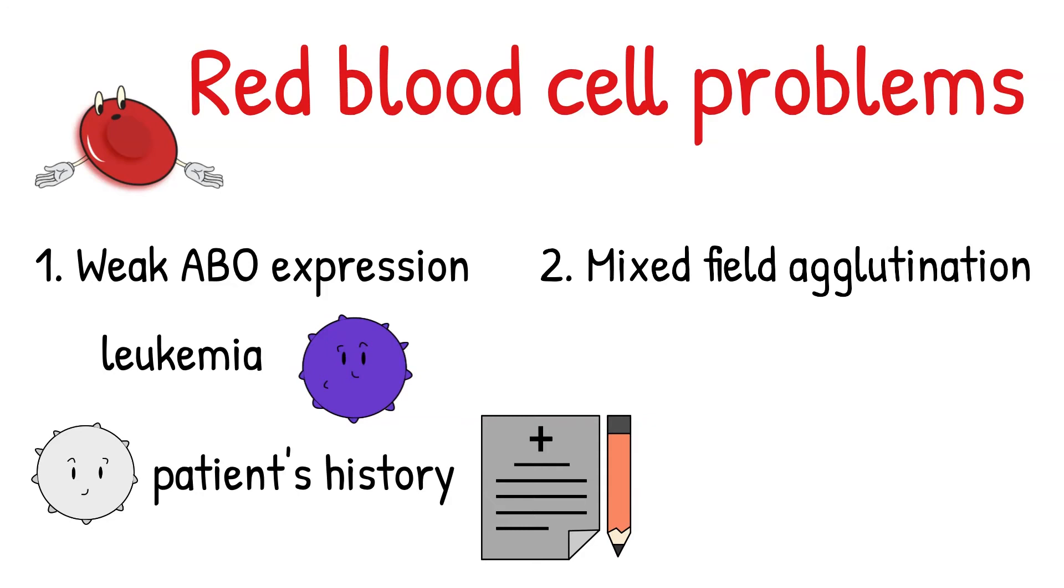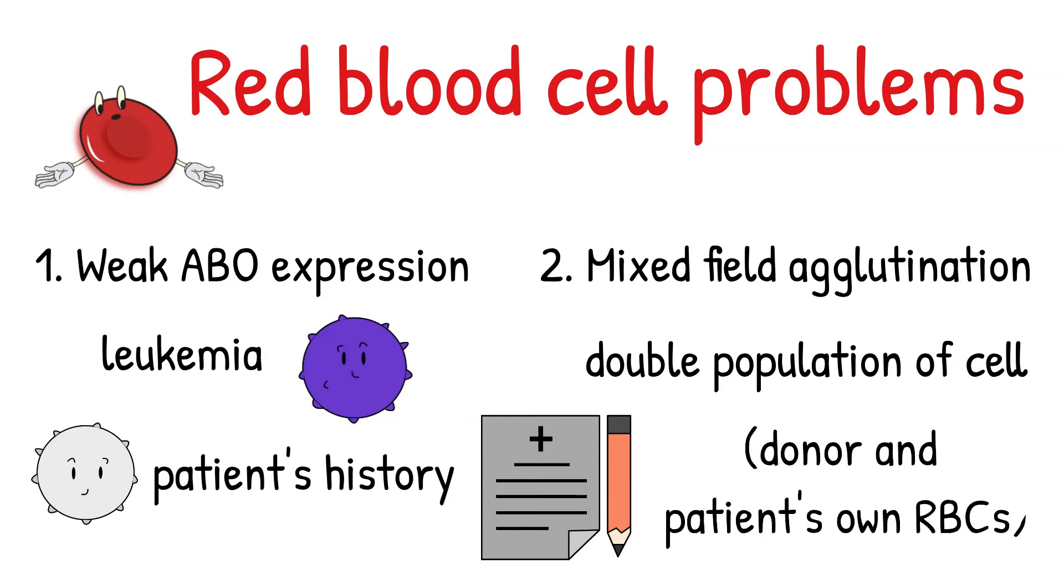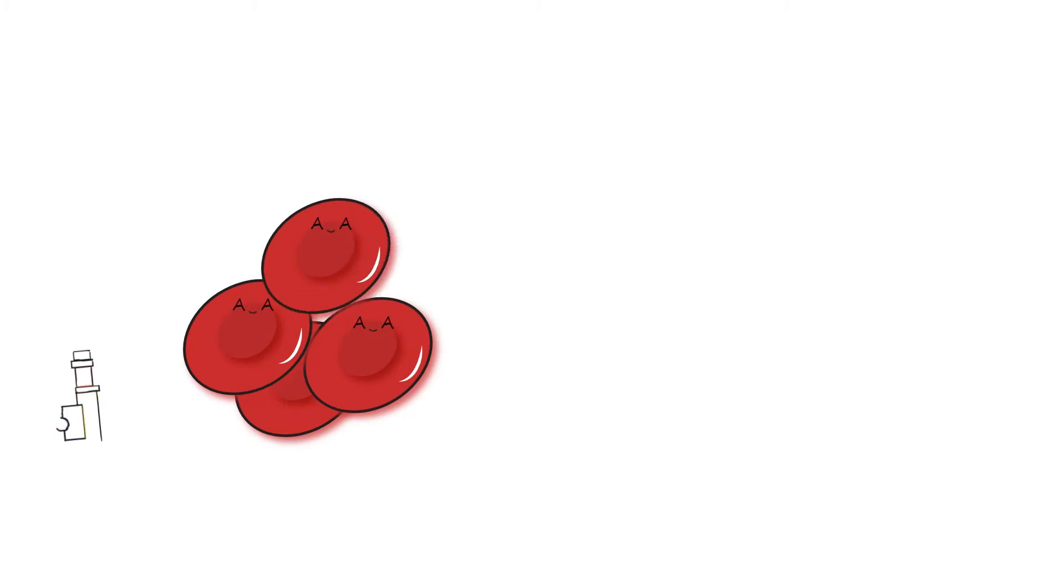Second, mixed field agglutinations. As the name suggests, there are the mixture of two population of cells. You see in patients who has been recently transfused. They are agglutinations and there are some free floating cells. This becomes more obvious when exam under microscope.